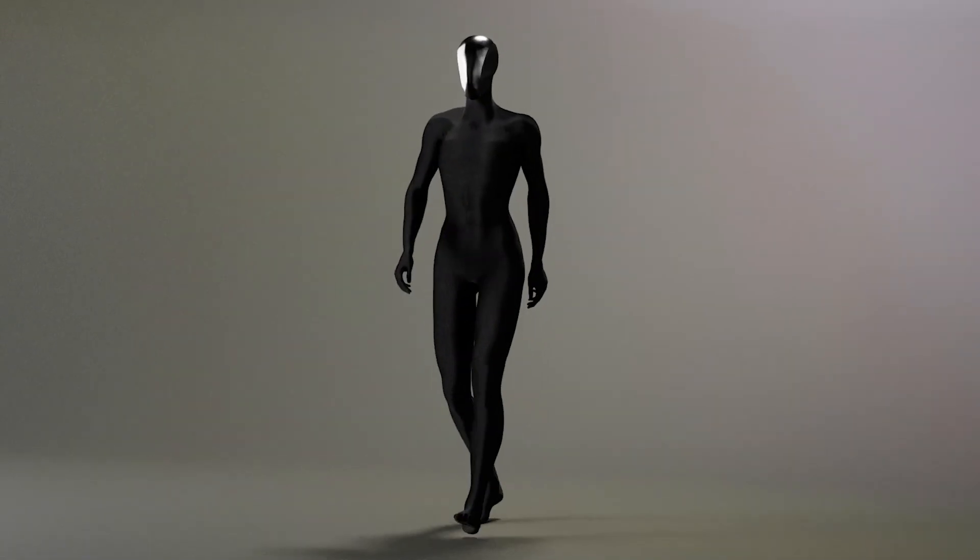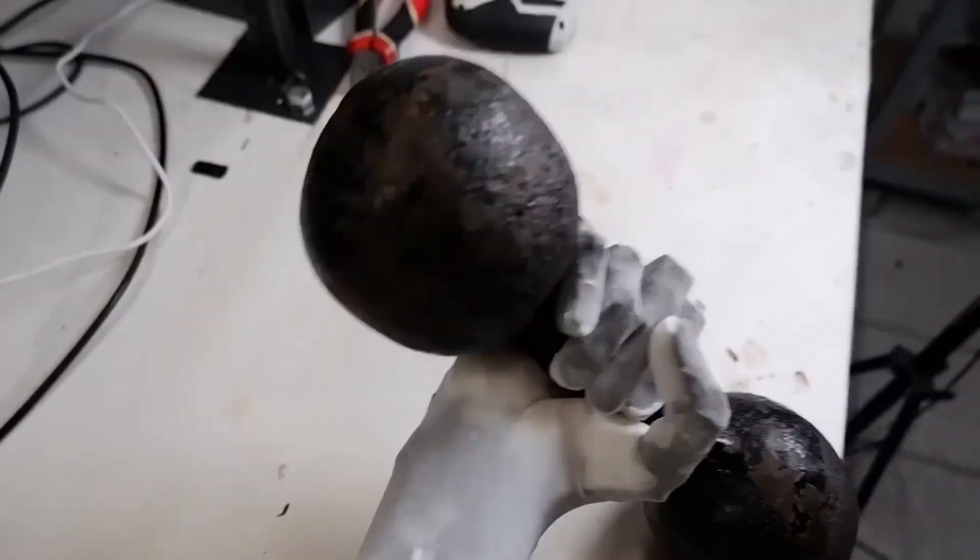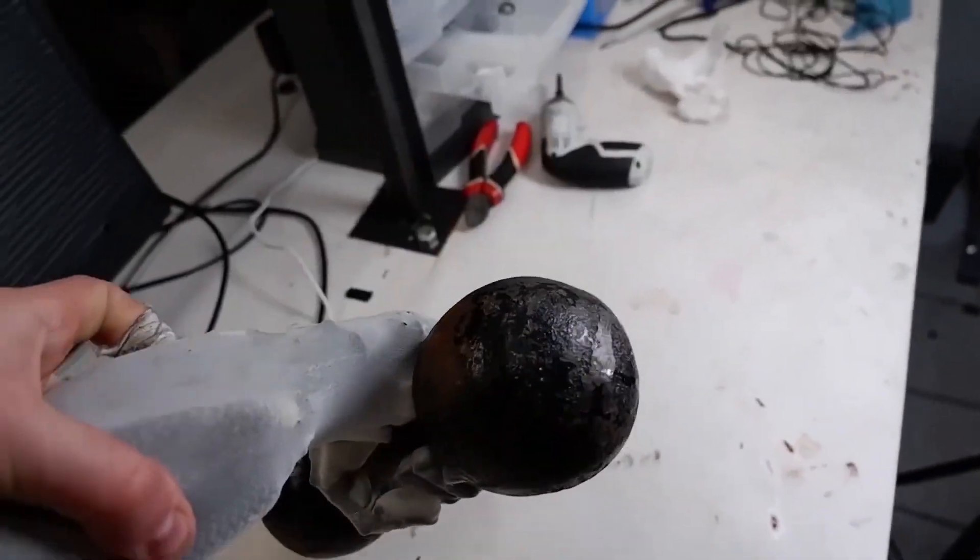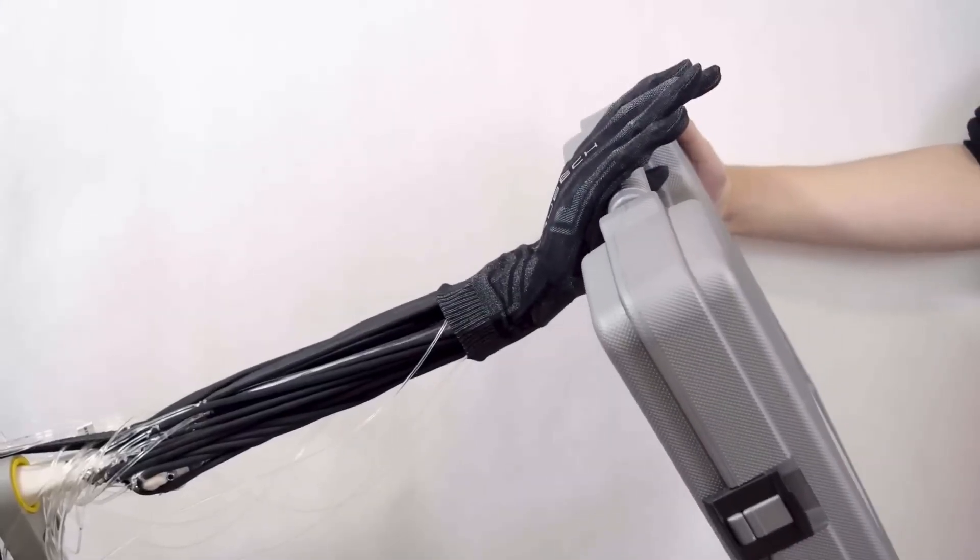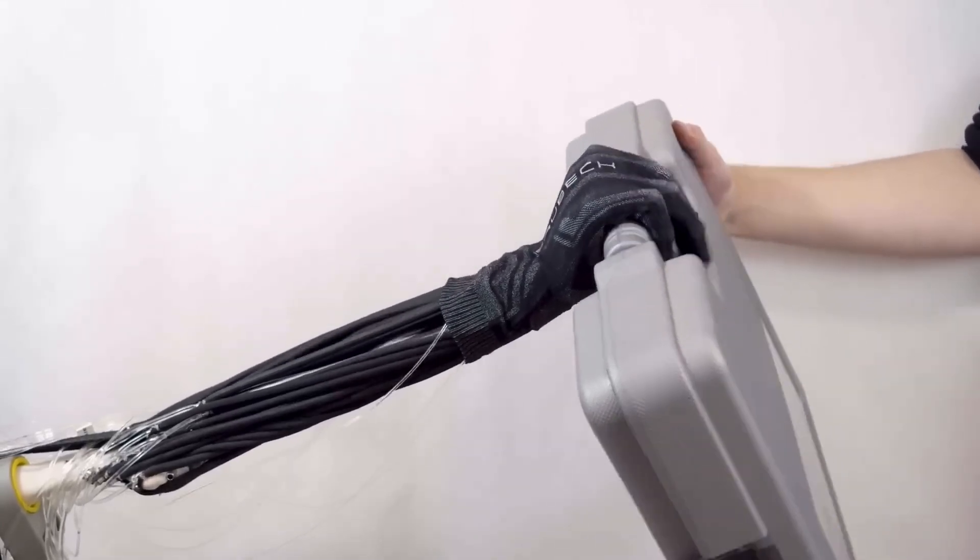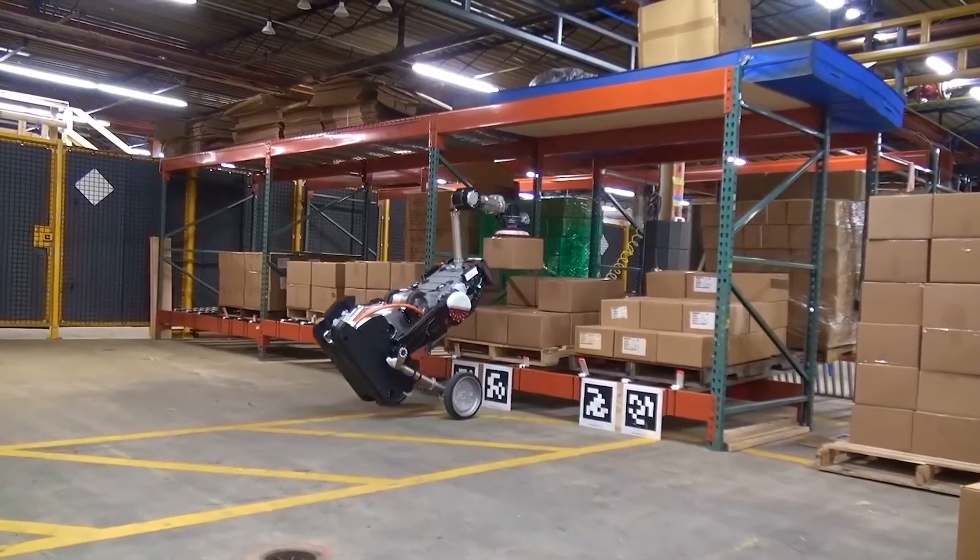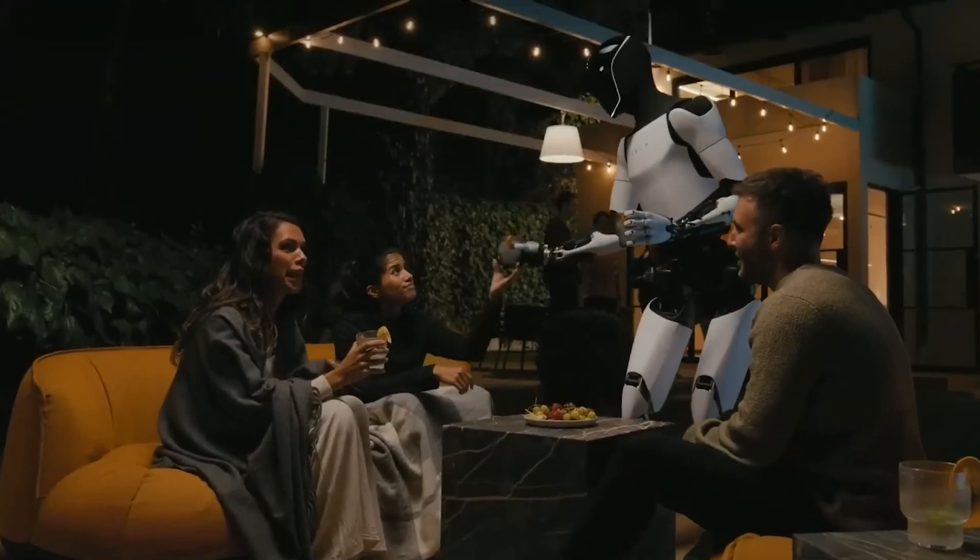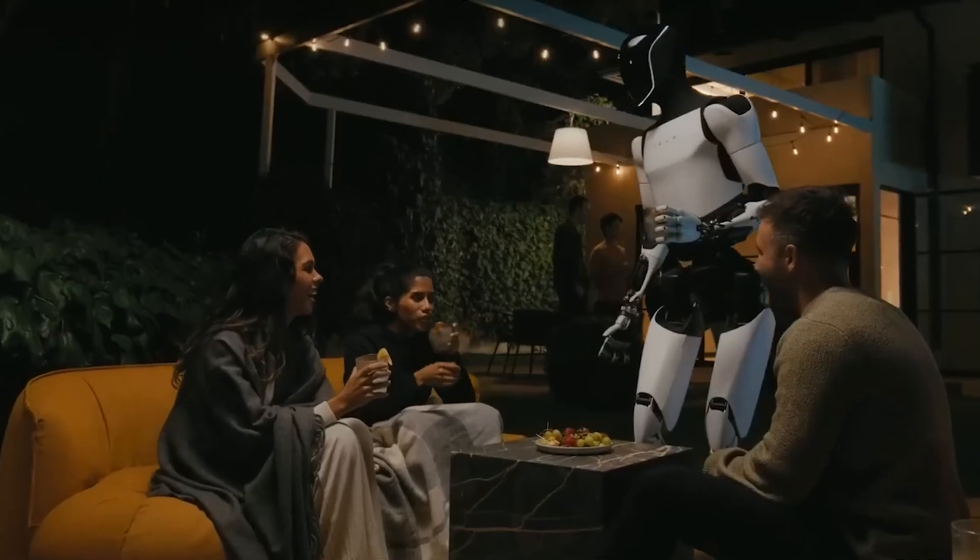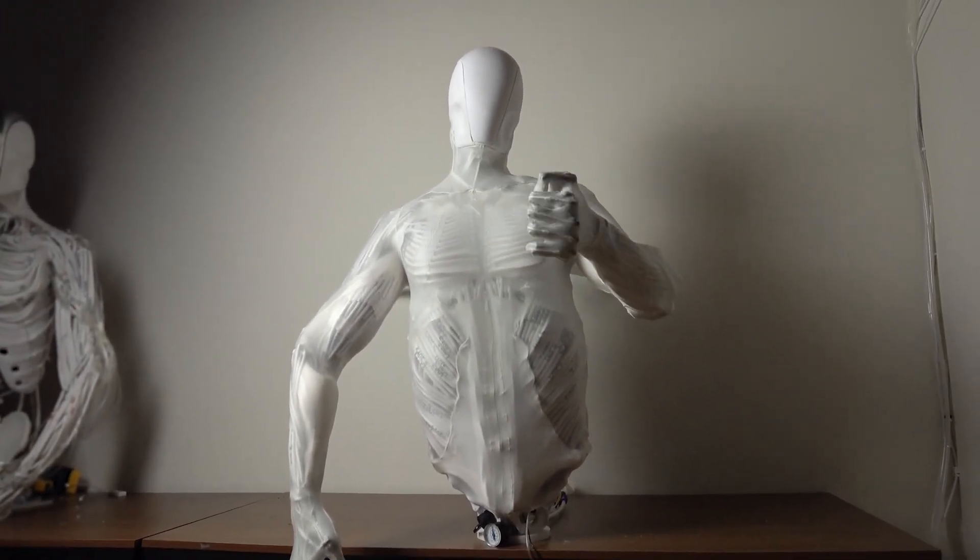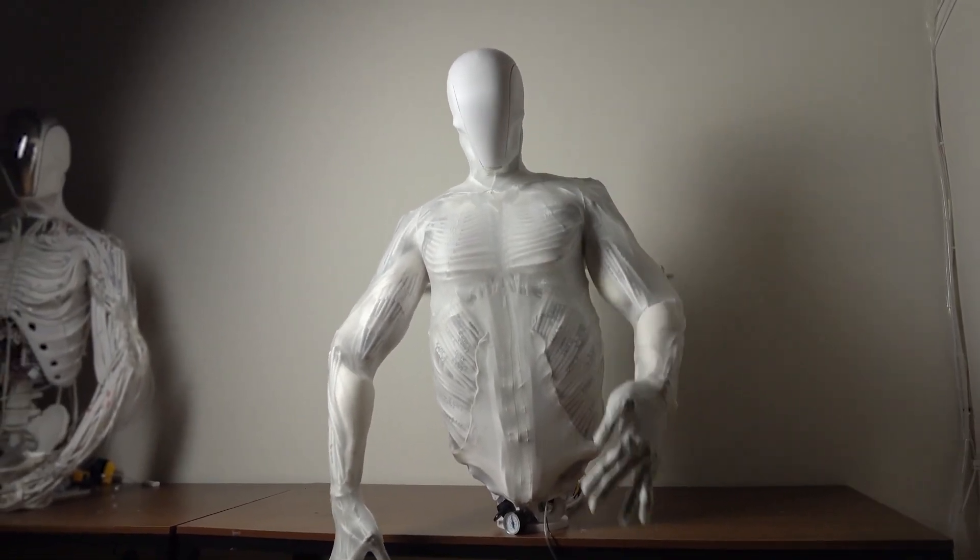The ProtoClone V1 is a step in this direction, suggesting that by embracing the complexities of human biology, we can push beyond the conventional boundaries of what robots are capable of. This shift enhances the potential applications of robotics and encourages us to rethink the essence of what it means to create machines that work alongside us. So what innovative technologies and design principles make ProtoClone V1 so unique?